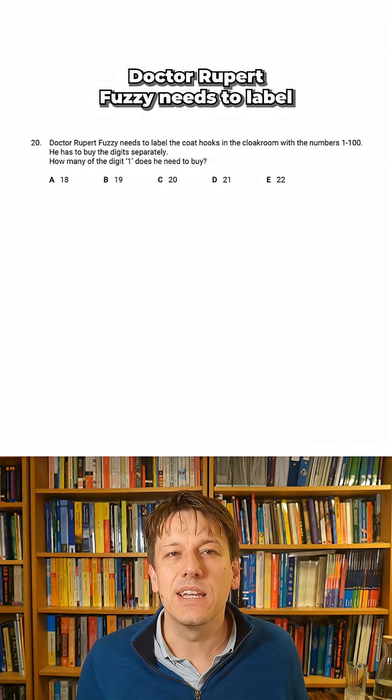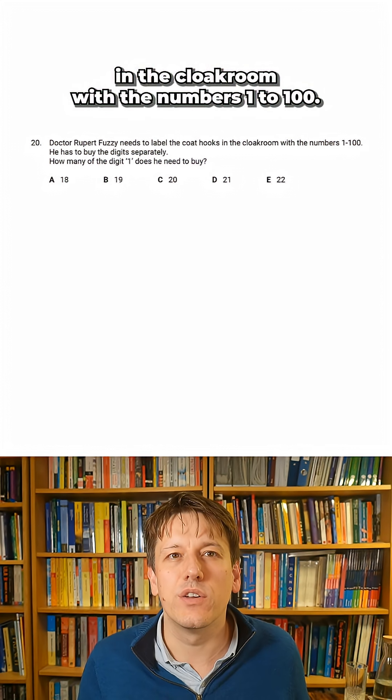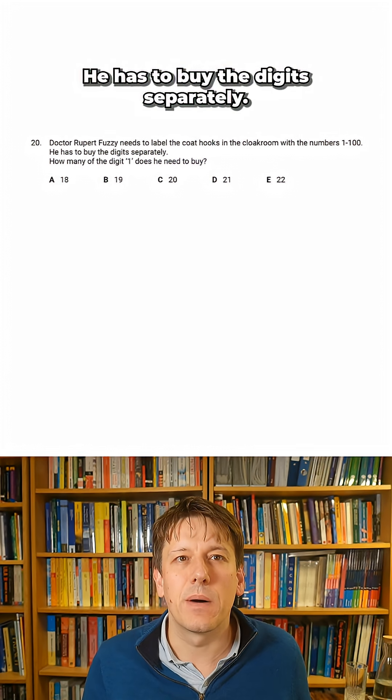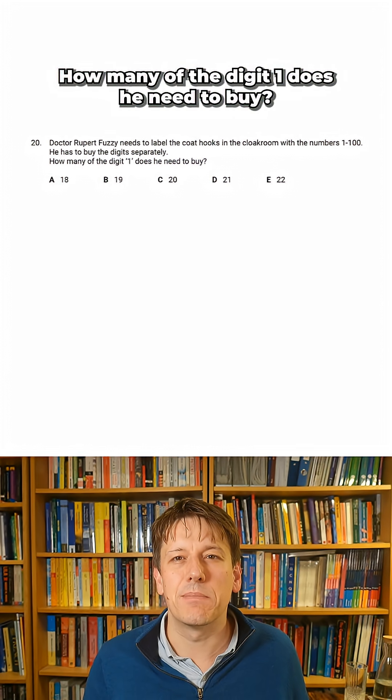Here's question 20. Dr. Rupert Fuzzy needs to label the coat hooks in the cloakroom with the numbers 1 to 100. He has to buy the digits separately. How many of the digit 1 does he need to buy?